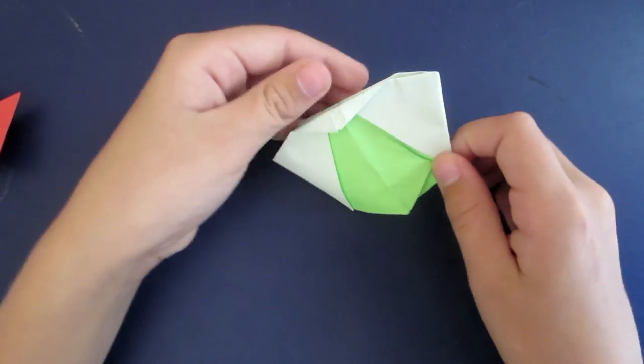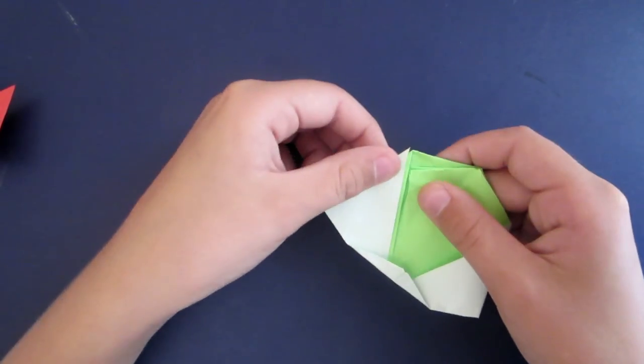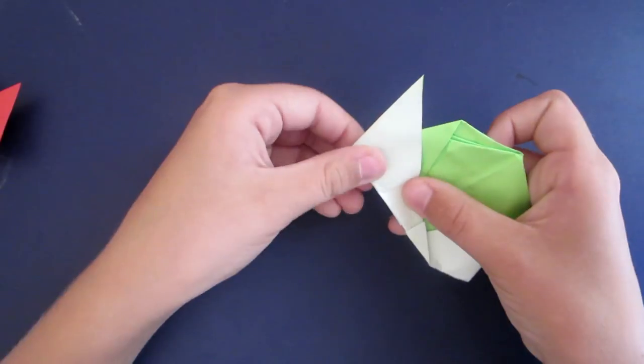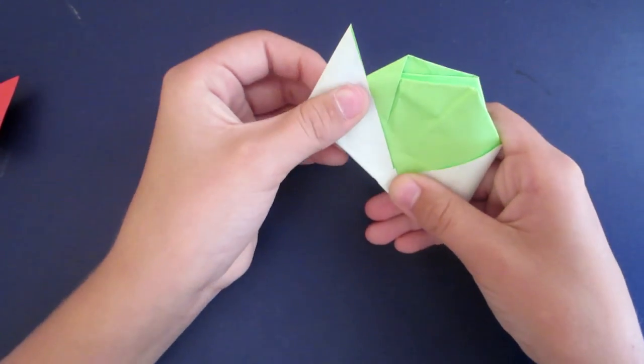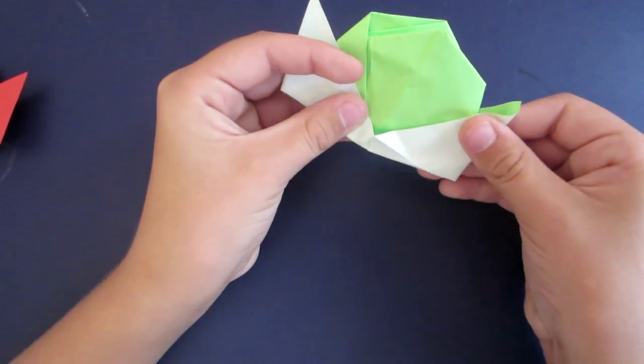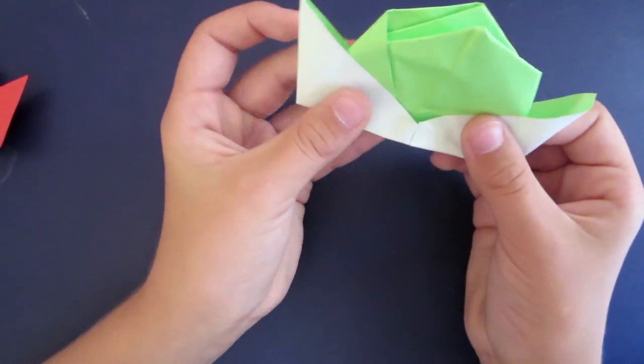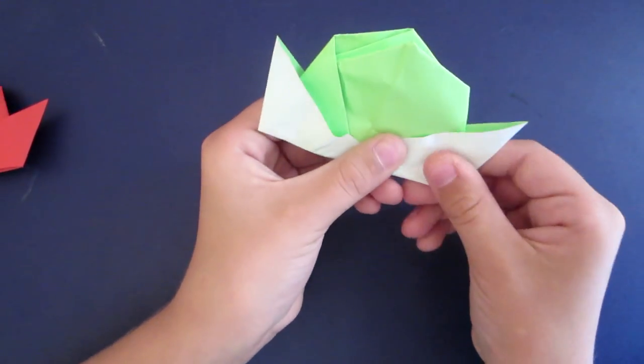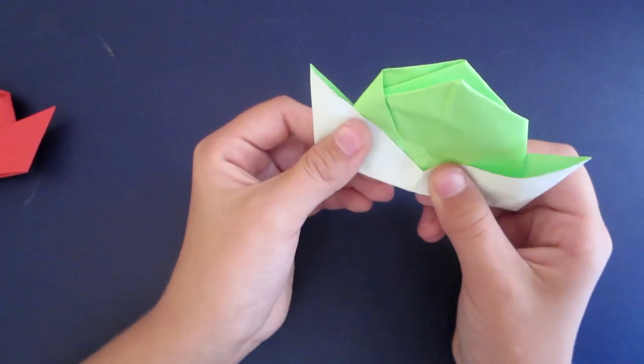Then you're almost done. Take this and pull it over to make one of these things. Take the other side, pull it, and then that's basically how to make a cowboy hat.